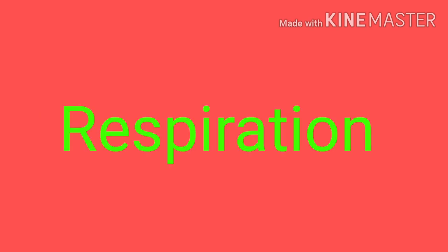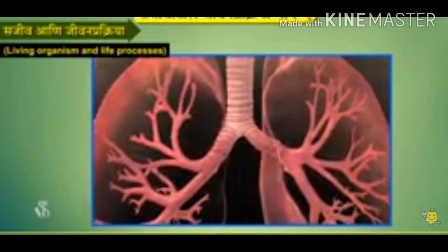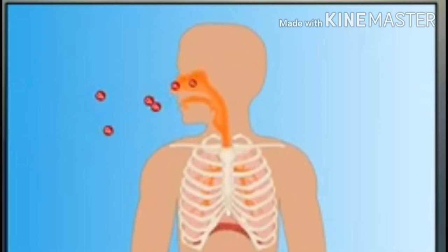Respiration. In living organisms, respiration occurs at two levels: the body level and the cellular level. Oxygen and carbon dioxide are exchanged between the body and surroundings in the case of body-level respiration. In cellular-level respiration, foodstuffs are oxidized either with or without the help of oxygen.